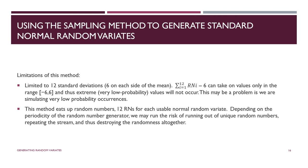What's not great about this method? By limiting ourselves to summing 12 random numbers, we truncate the extremes — sometimes we do want to sample from very low probability values in the tails, and this method won't work well for that. In addition, we're using 12 random numbers for every single normal random variant, so we'll run through our pseudo-random number generator period very quickly, meaning we need a generator that doesn't start cycling too soon.